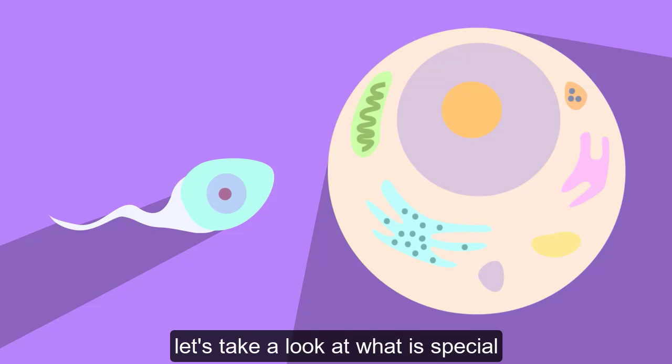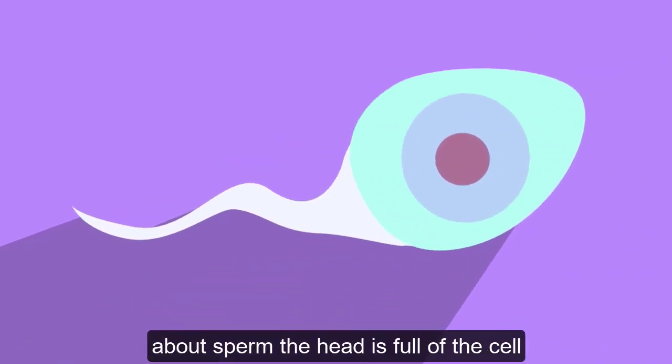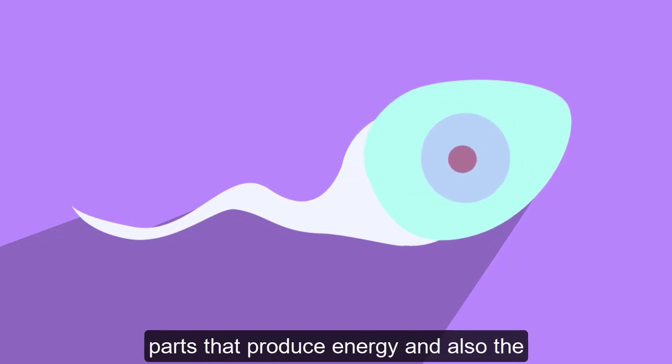Let's take a look at what is special about sperm. The head is full of the cell parts that produce energy and also the nucleus. The sperm needs lots of energy to get moving. As you can see, there is a tail that it uses to swim to the egg cell.